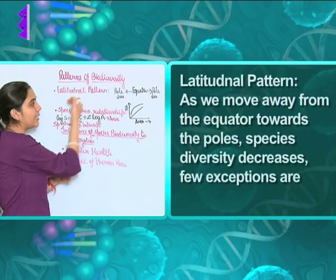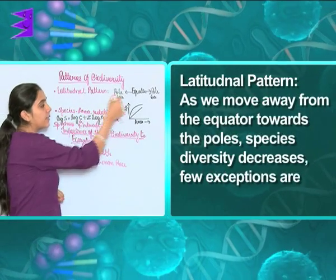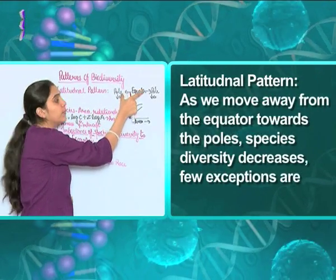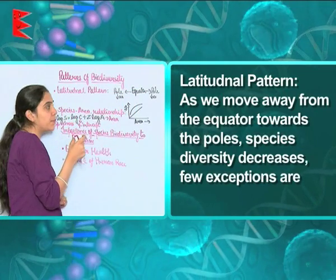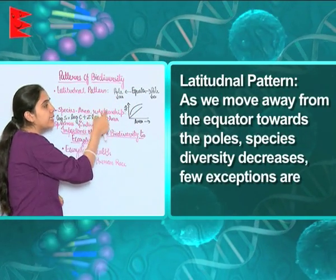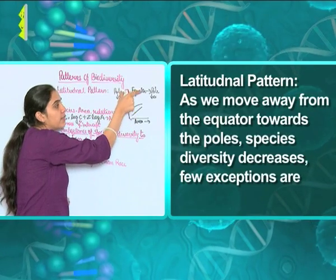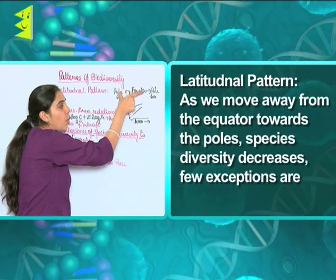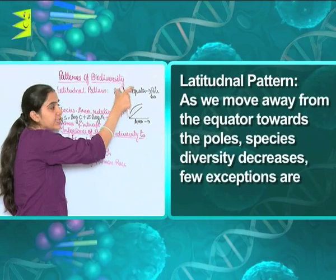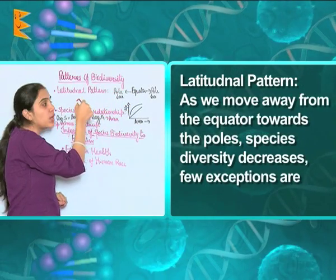In the latitudinal pattern, what we observe is that as we move away from the equator towards the poles, biodiversity decreases. This is because towards the poles the temperature varies greatly.